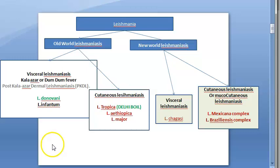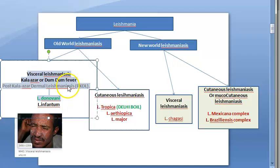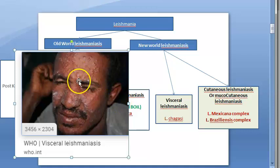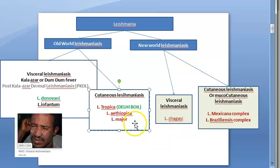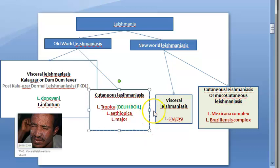There is also post-kala-azar dermal leishmaniasis (PKDL), which is caused by Leishmania donovani. So remember: visceral leishmaniasis of the Old World, kala-azar, Dum-Dum fever, and PKDL are all caused by Leishmania donovani. Cutaneous leishmaniasis is caused by Leishmania tropica, also called Delhi boil. If the exam asks about Delhi boil, remember it is cutaneous leishmaniasis of the Old World caused by Leishmania tropica.